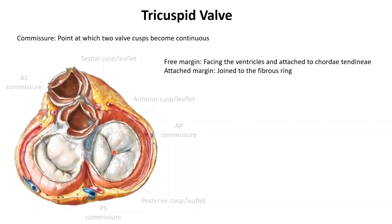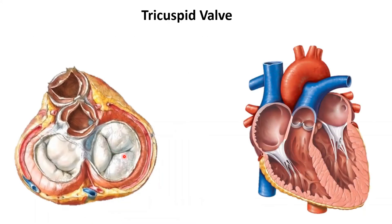What are the chordae tendineae? This is the anterior view of the heart. You can see the free margin of the cusp and these fibrous cords attaching to the free margin are the chordae tendineae. 'Chordae' means cord-like, 'tendineae' means tendons — so these are fibrous cords that look like tendons, attached to the free margins of the tricuspid and bicuspid valve cusps on one end.